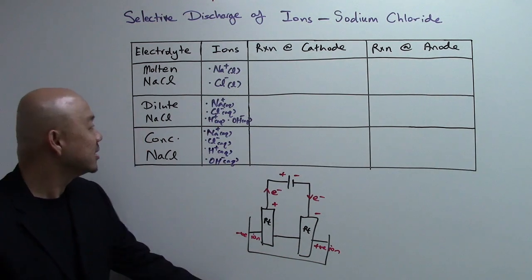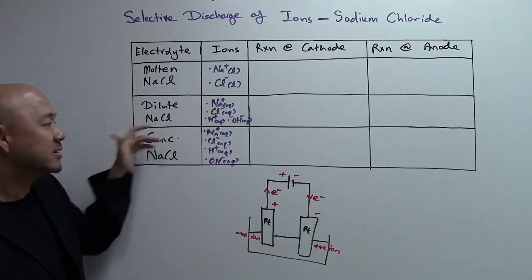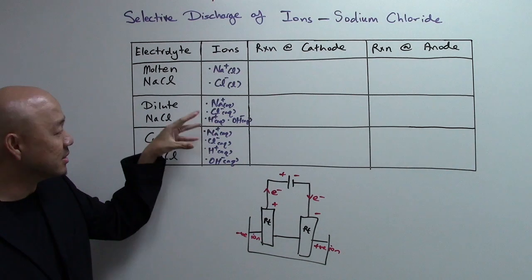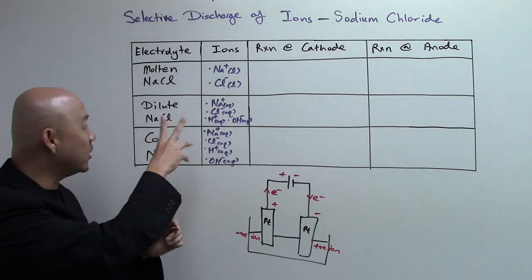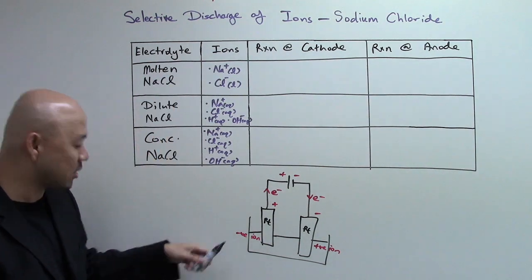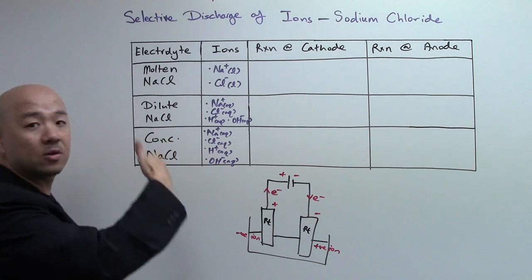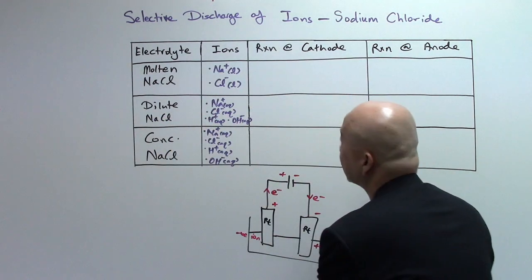Then what? Next. You realize dilute and concentrated, they seem to have the same type of ions, is true, but in the concentration they are different. Later I'll take a look on the dilute and the concentrated solution. We talk about the easy one, molten sodium chloride. So there's only one cation, one anion, so it's very easy. So I'm going to use a black color on this side.